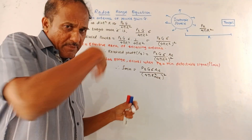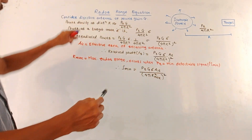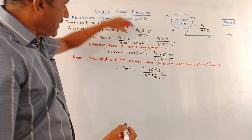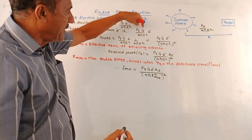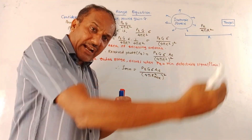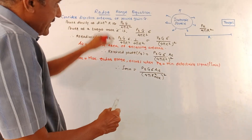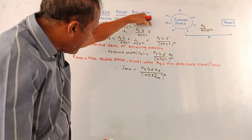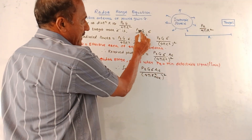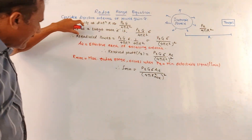The target receives the pulses over a particular area sigma (σ), which is the target cross-sectional area. So power at the target area sigma is given by Pt × G × σ / (4πR²). The target then re-radiates that power back toward the radar. The re-radiated power received by the radar is obtained by multiplying again by 1/(4πR²), giving the term Pt × G × σ / (4πR²)².